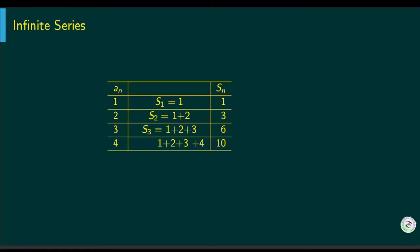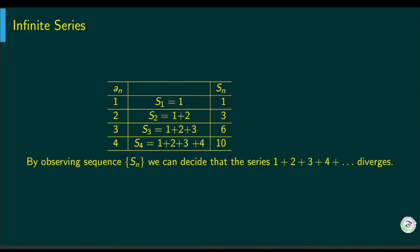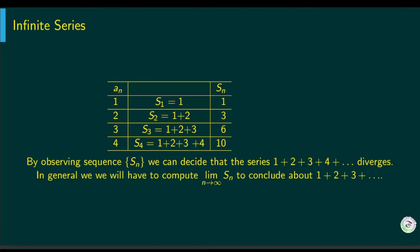By observing the sequence of partial sums S_N, we can say that this infinite series diverges, because the sequence of partial sums goes to infinity. The convergence of a series is decided by looking at the sequence of partial sums. To find the sum of a series, we use the limit of the partial sums.